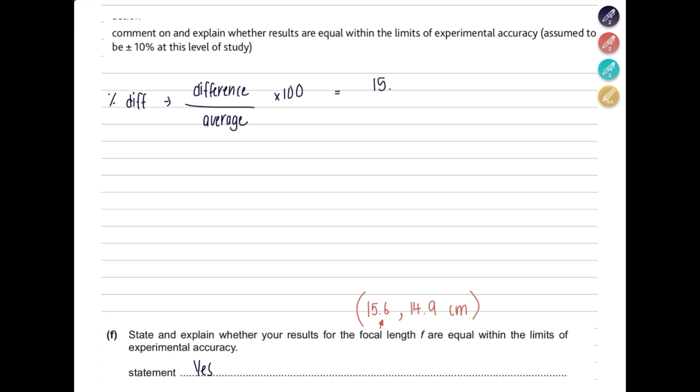This is going to be 15.6 minus 14.9 divided by average, just add them and divide them by 2, and multiply this by 100. This is going to be 4.59 percent.